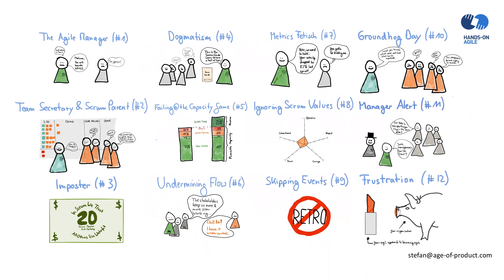Then we had the failure at the capacity team — some Taylorist elements are pushing for 100% utilization and the Scrum Master is not fighting against that. Then we have the case of stakeholders undermining the flow during the sprint.